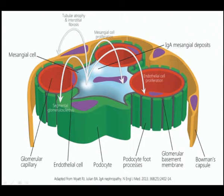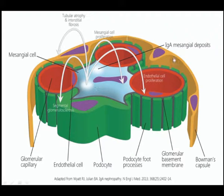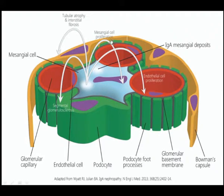This picture was summarized in an IgA nephropathy New England Journal of Medicine publication from 2013, where IgA mesangial deposit leads to the 4-hit cascade process, which could lead to segmental glomerulosclerosis, endothelial proliferation, mesangial cell proliferation, tubular atrophy, and interstitial fibrosis depending on the site of injury.